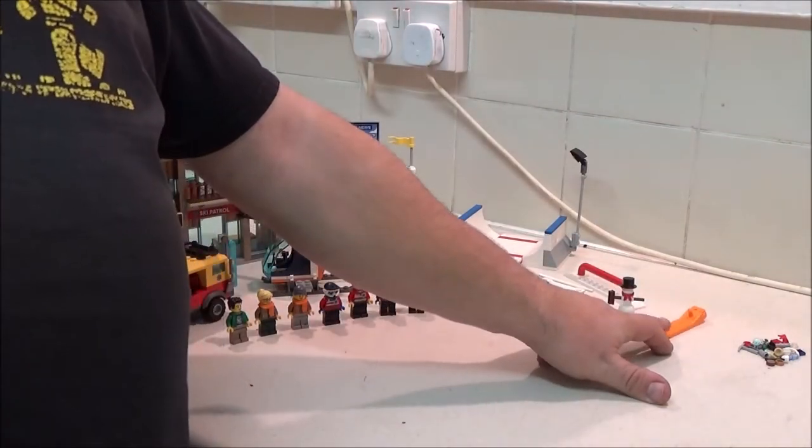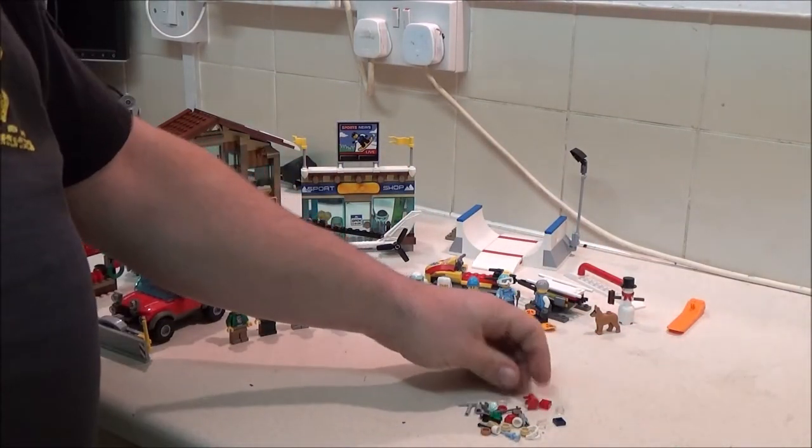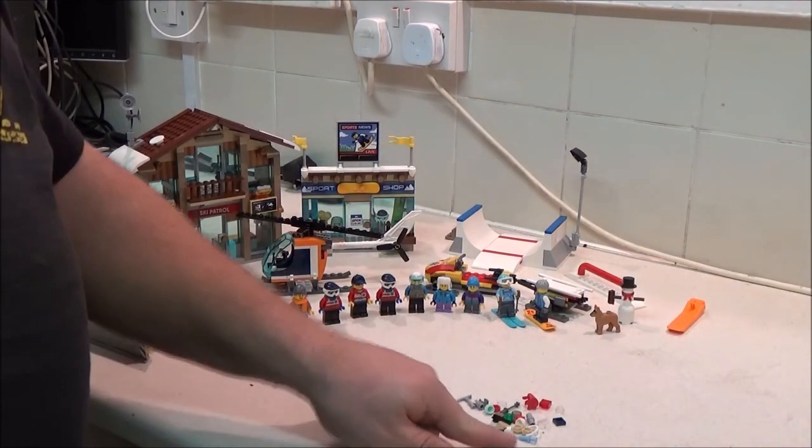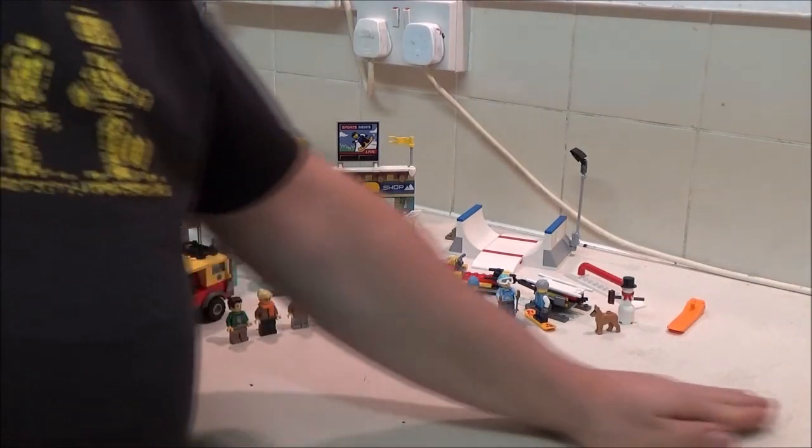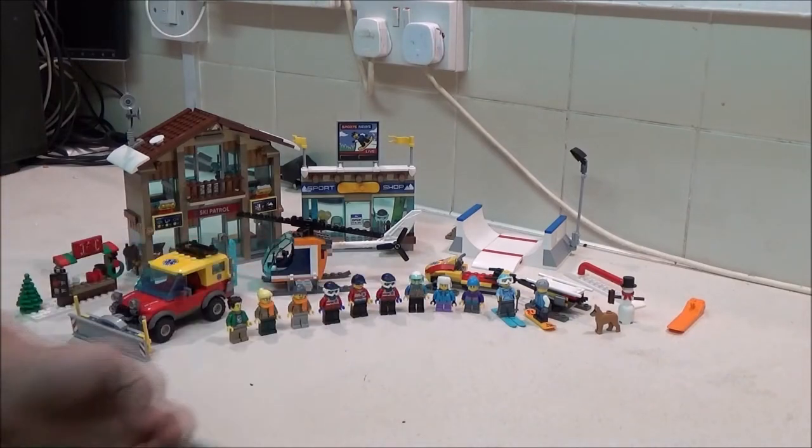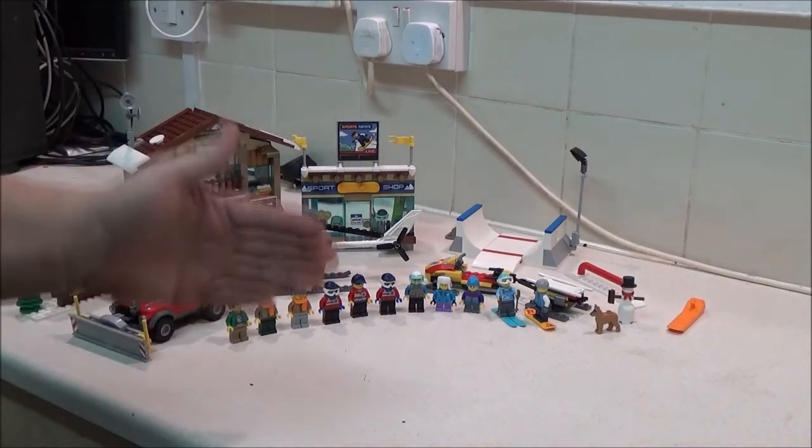And we also have another brick separator and a pile of extra pieces. Just various sort of one-by-one studs and tiles and plates, and there's actually a spare syringe there and a spare ice pick, a spare ski stick. There is a reason Lego include extras like that and I cannot remember what they are. So, as always, I'm going to go through the minifigures first and I'm going to start this end and work along.